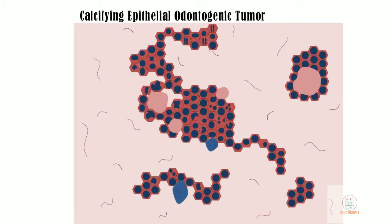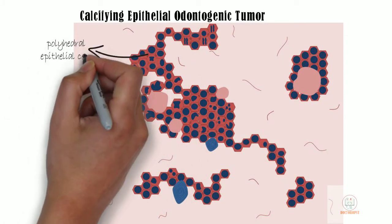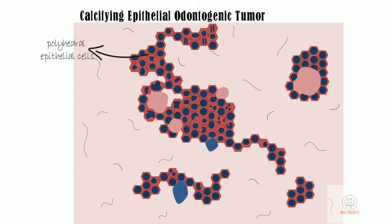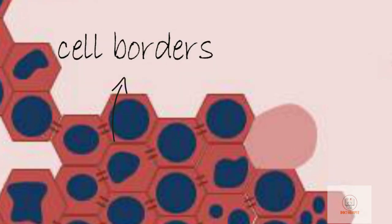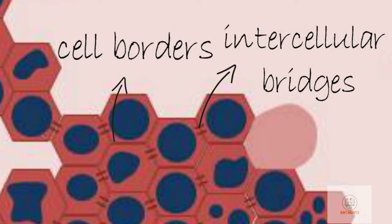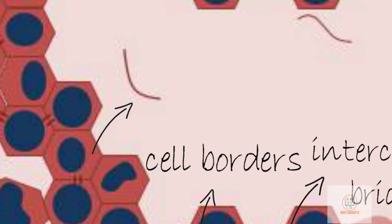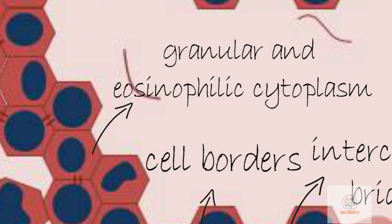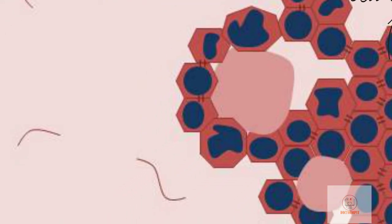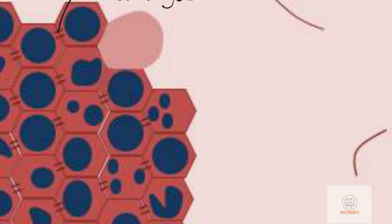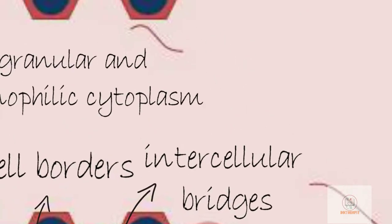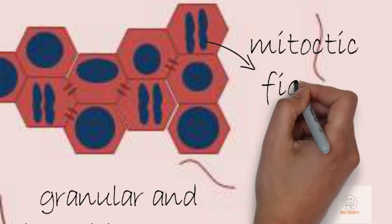The histology of CEOT shows a solid tumour composed of polyhedral epithelial cells arranged in sheets, small islands, or cords. At higher magnification, these cells show distinct cellular borders with prominent intercellular bridges. The cells have a granular and eosinophilic cytoplasm. The nuclei are hyperchromatic and pleomorphic. Few cells may show multiple nuclei, and many tumour cells show mitotic activity.